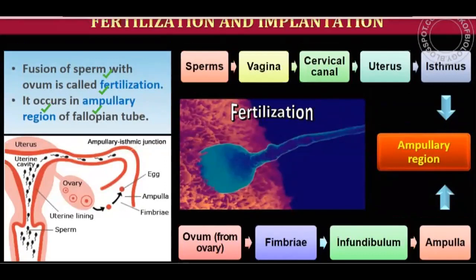The sperms are released into the vagina and take the pathway to the site of fertilization. They cross the uterine cavity, reaching the ampullary-isthmic junction. The pathway is: vagina, then cervical canal, then uterus, then isthmus, and then to the ampulla.